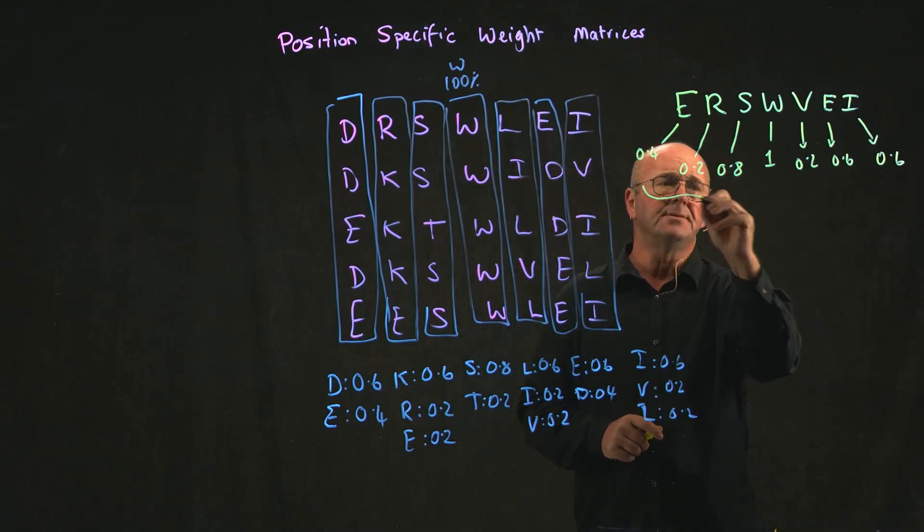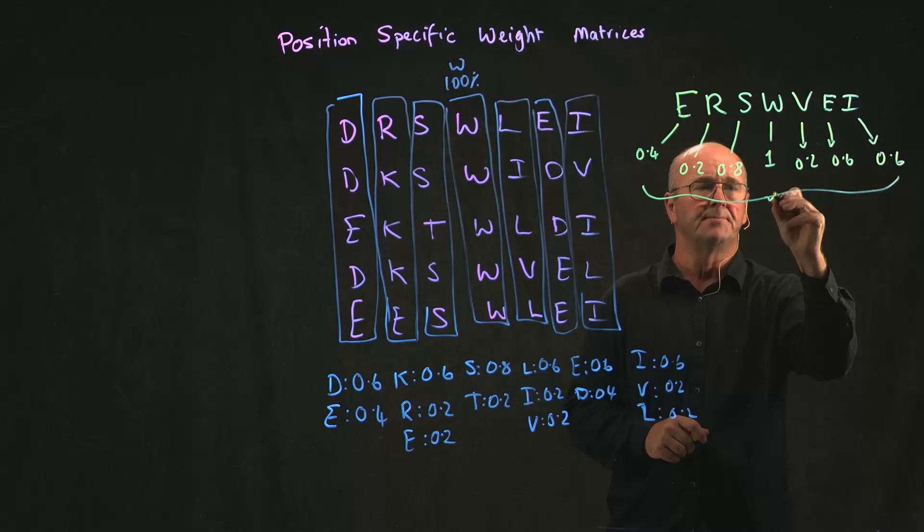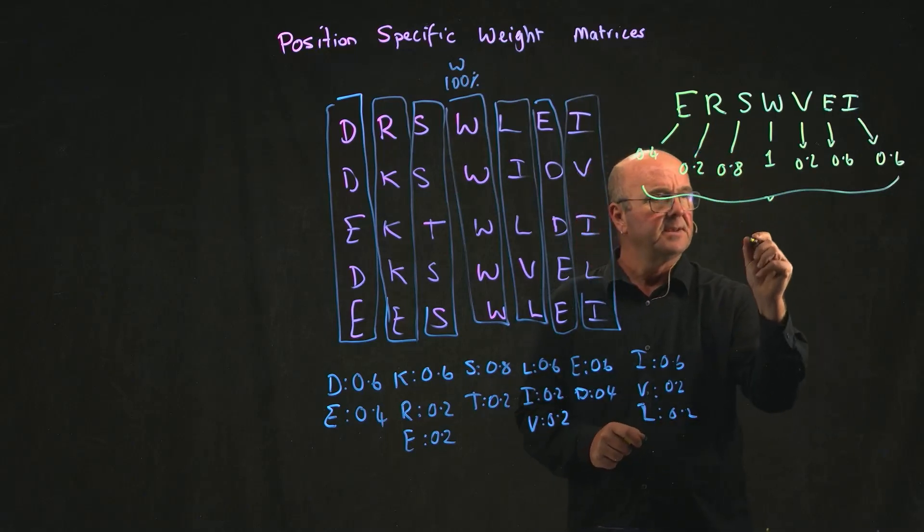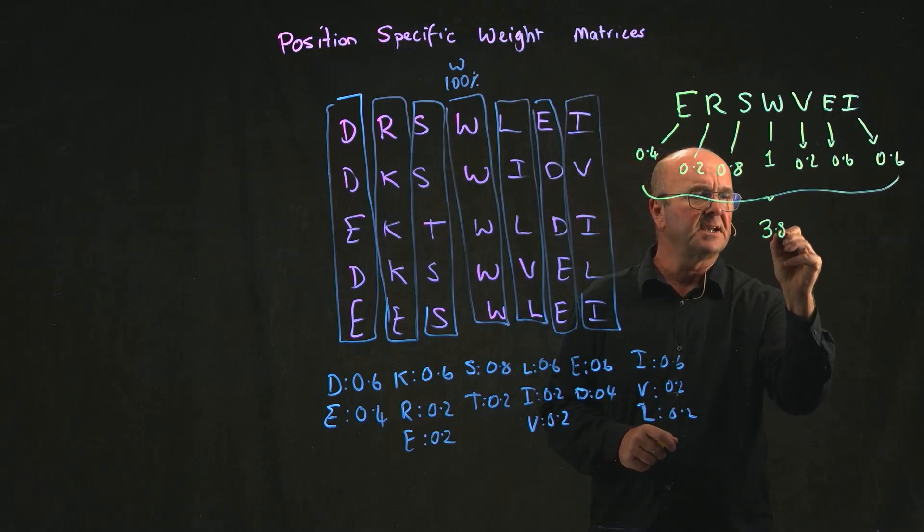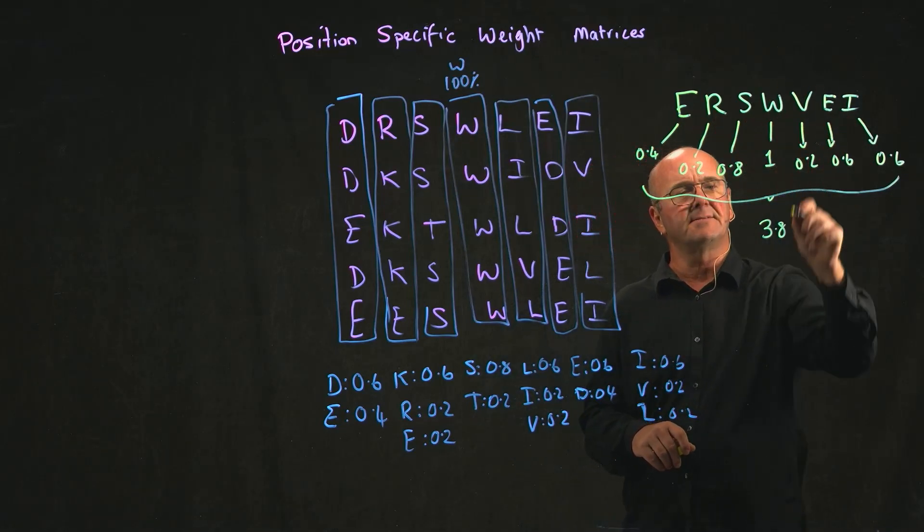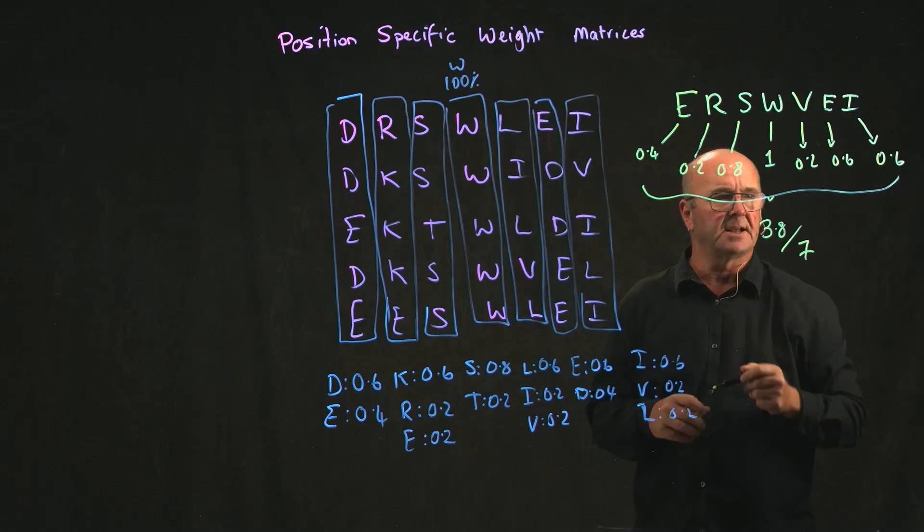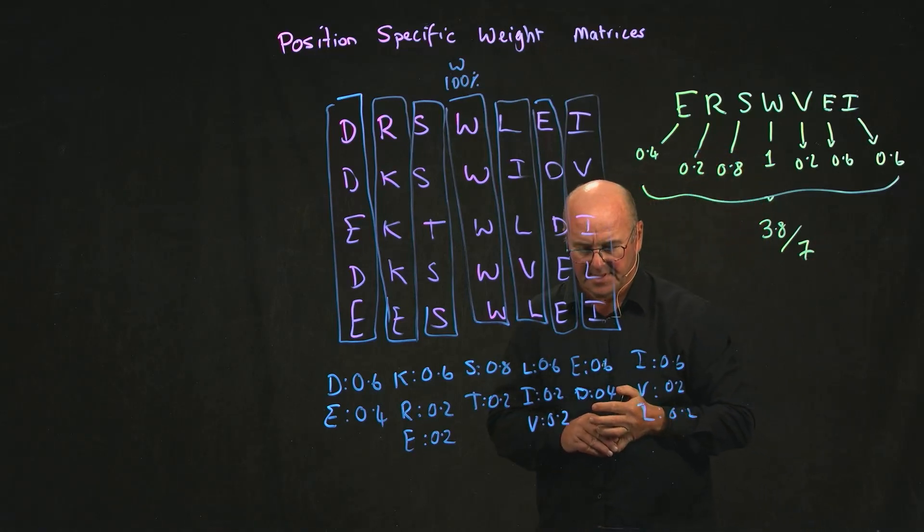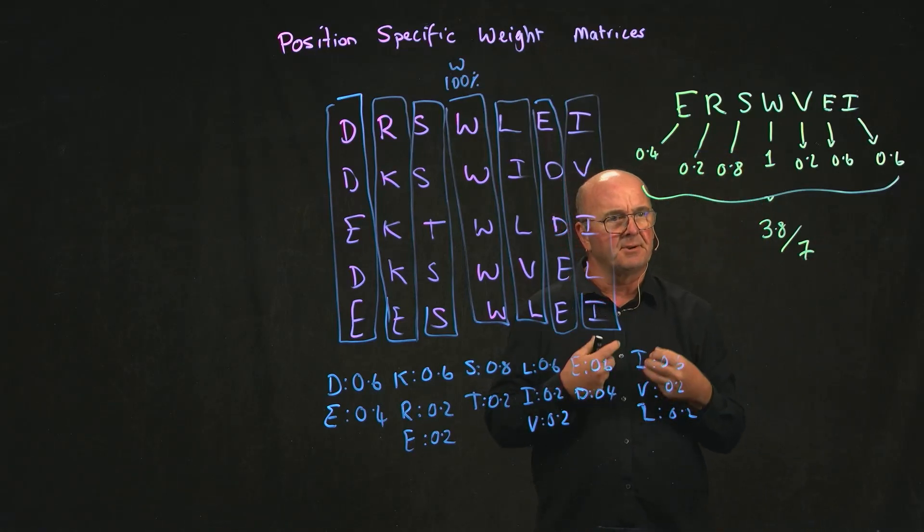And so all I need to do is sum up these scores. Gives me a score, in this case, of 3.8, and I have 1, 2, 3, 4, 5, 6, 7. I have 3.8 out of 7. So I have a score of 3.8.